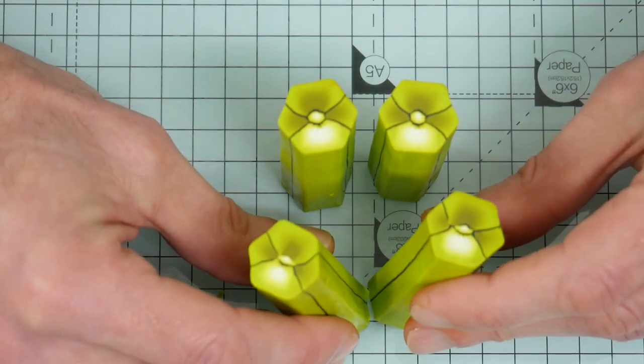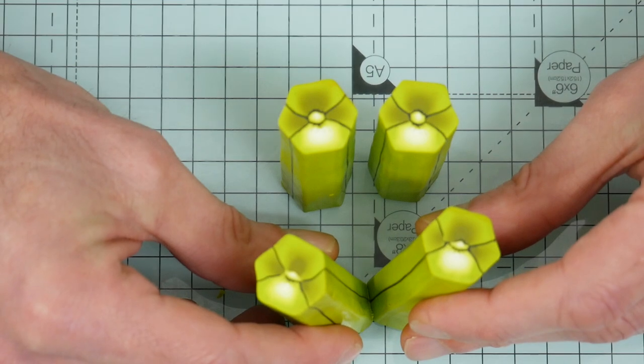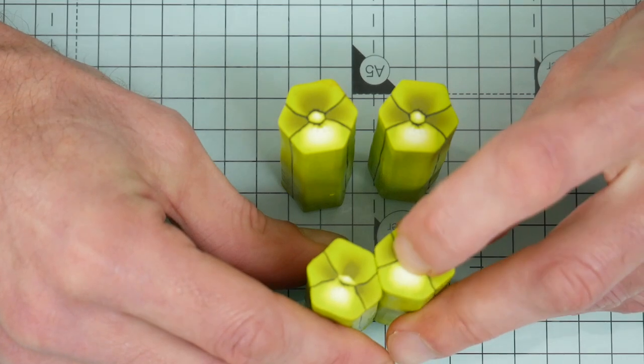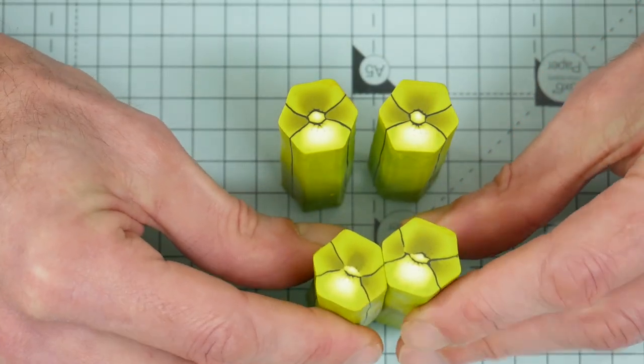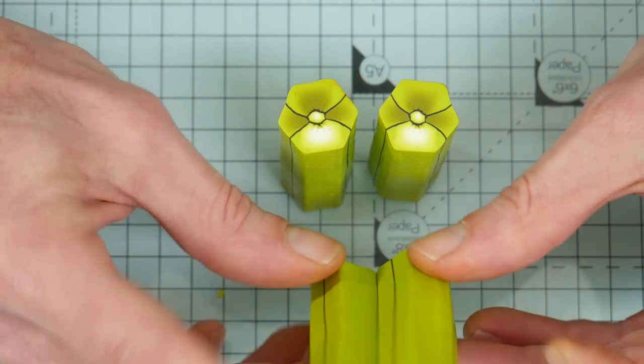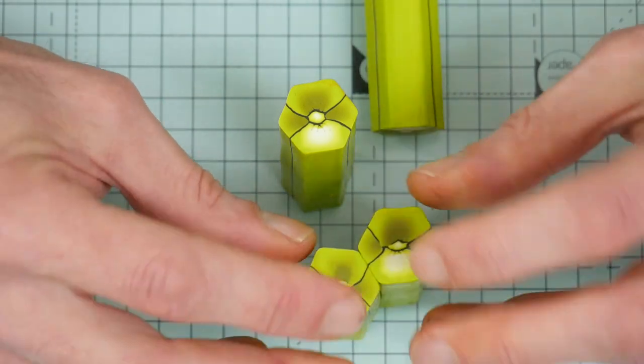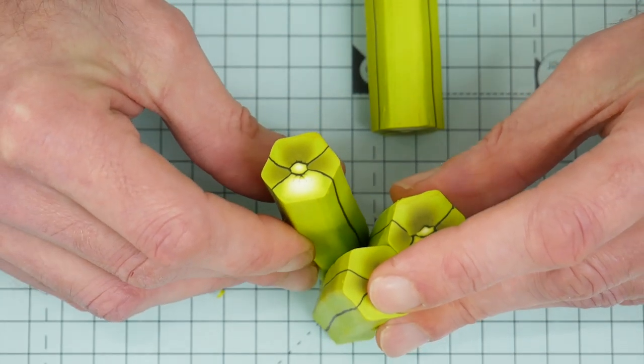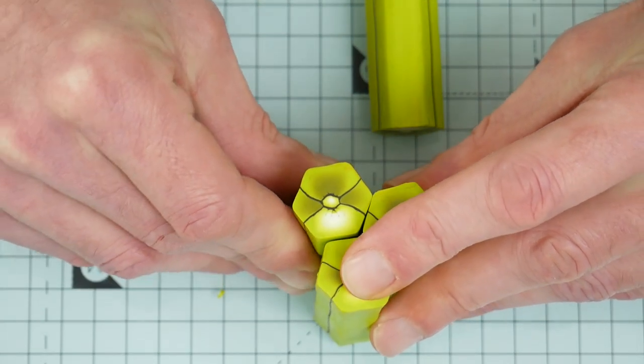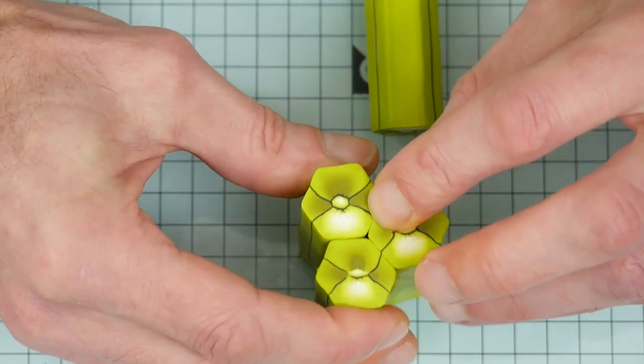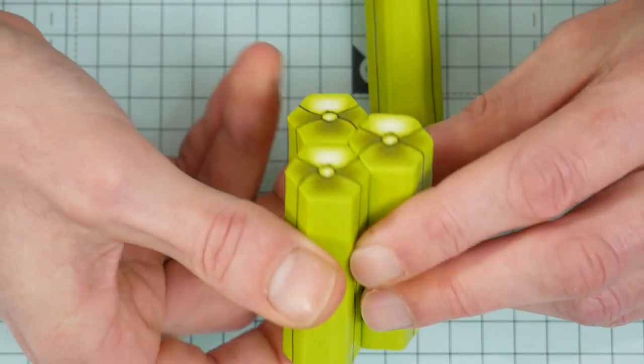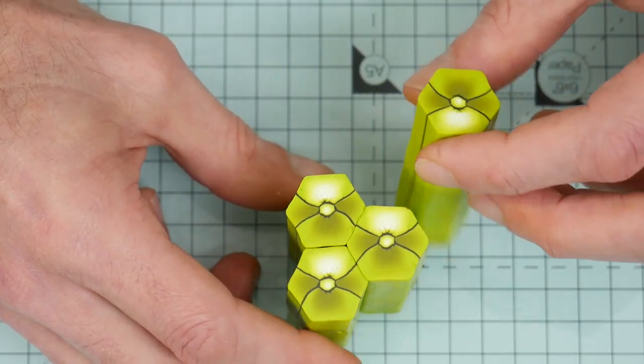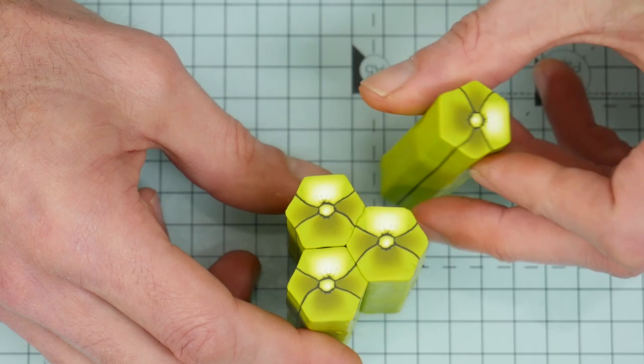We want to match this line, and we want to match it over the full length of the cane. So I'm putting it together gradually, double checking on the back. My next piece is going to go here. Again, match the line. And the last piece, like that.